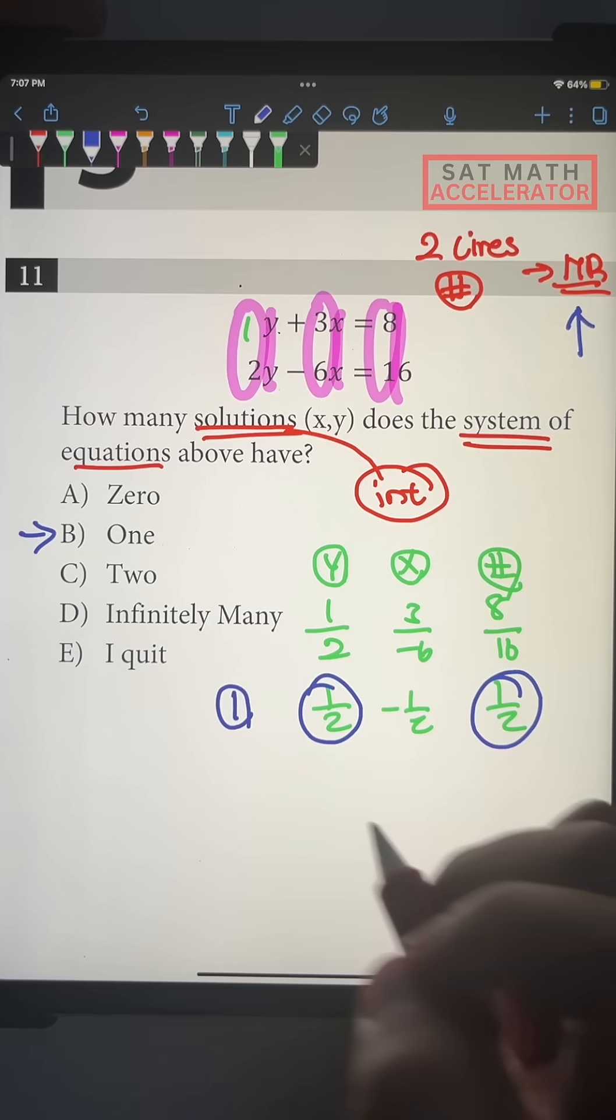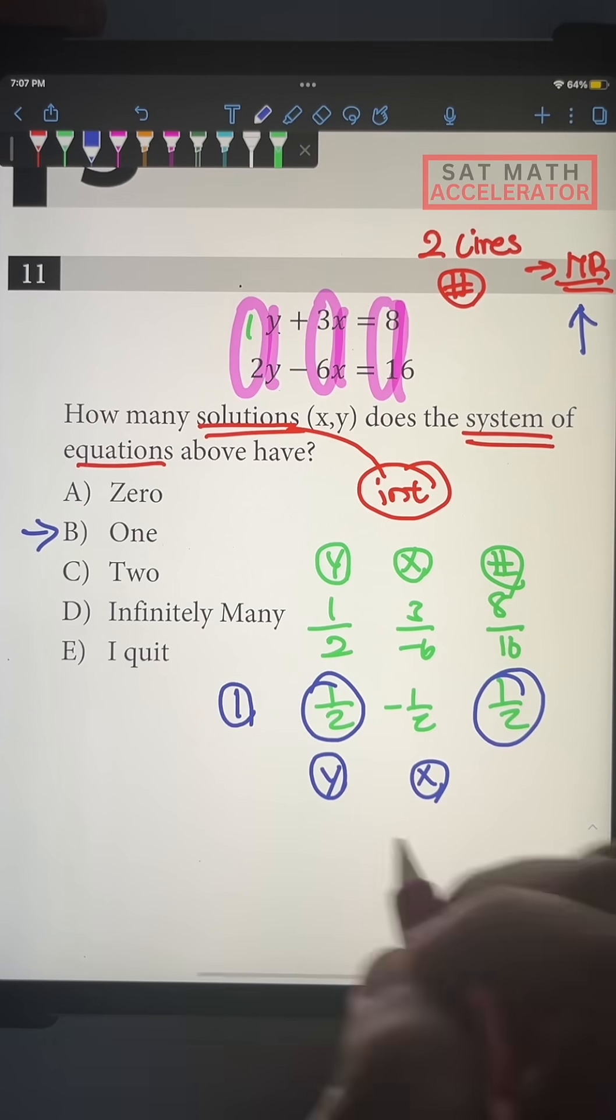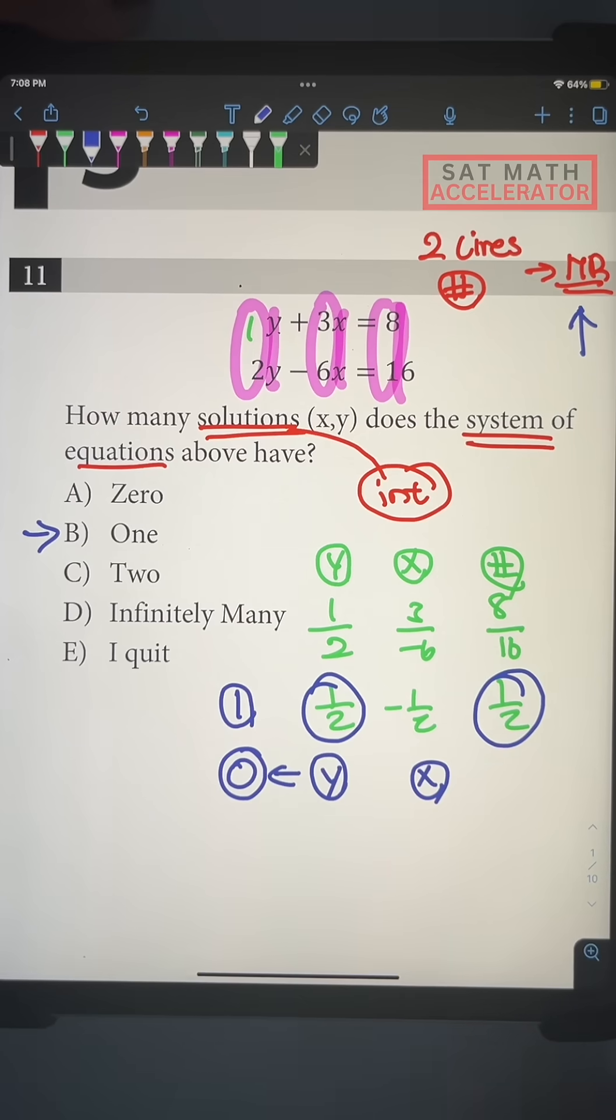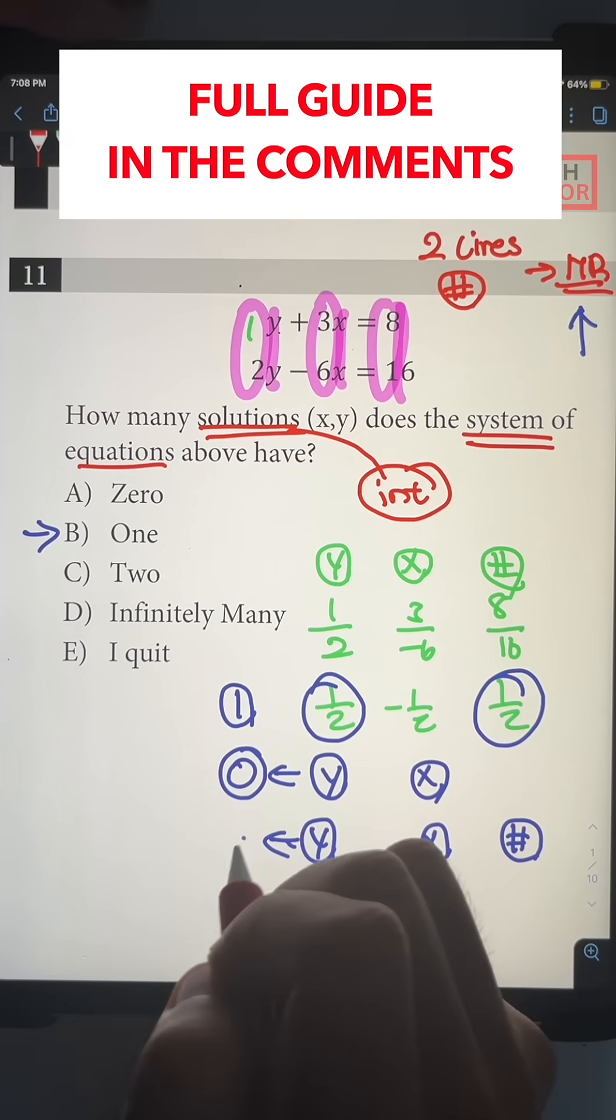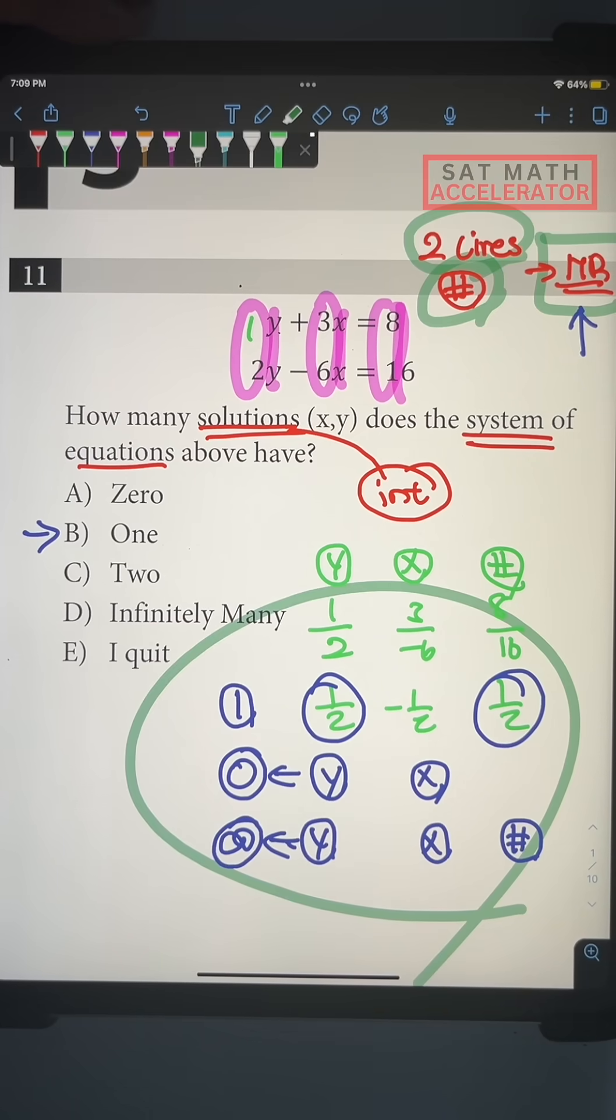But let's say in future problems, you see a case where y and the x is matching. If that's the case, you have zero solution. And when you have everything matching, y matching, x matching, and the number matching, that's how you know you have infinitely many solutions. The SAT is an exam of patterns like this.